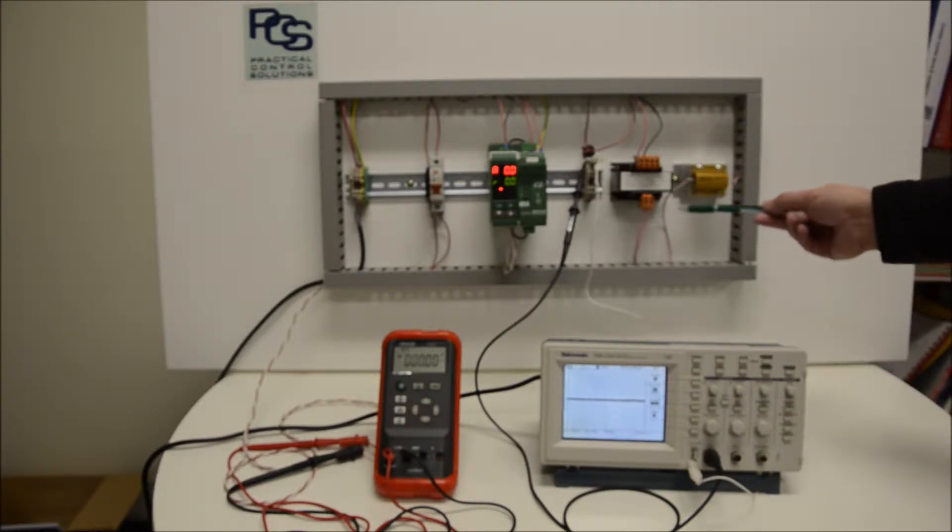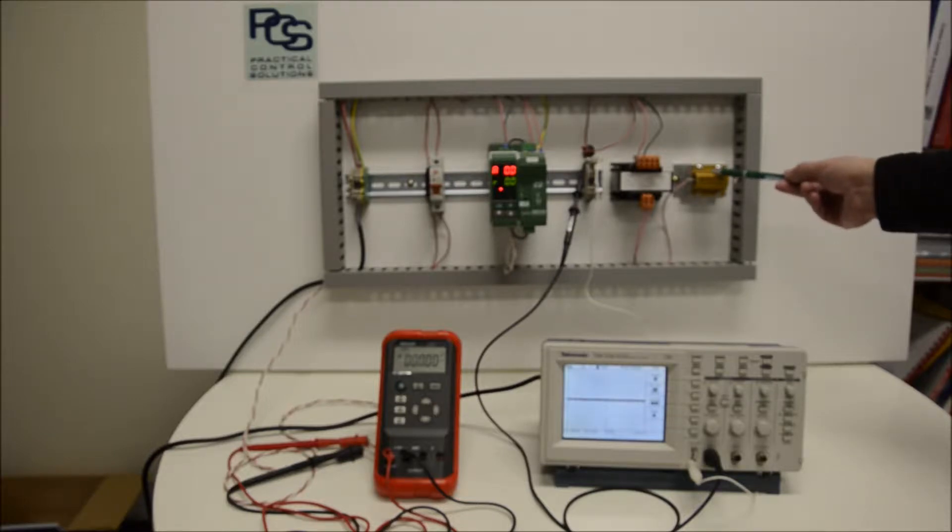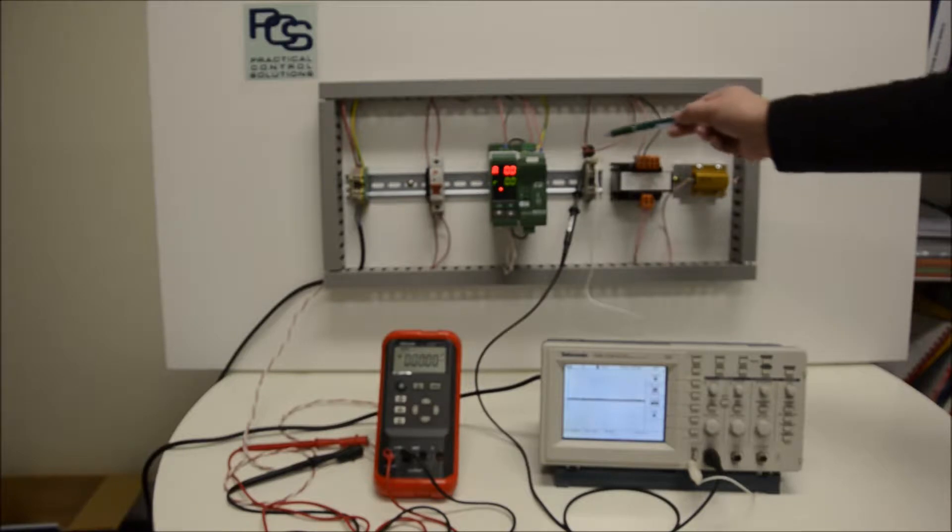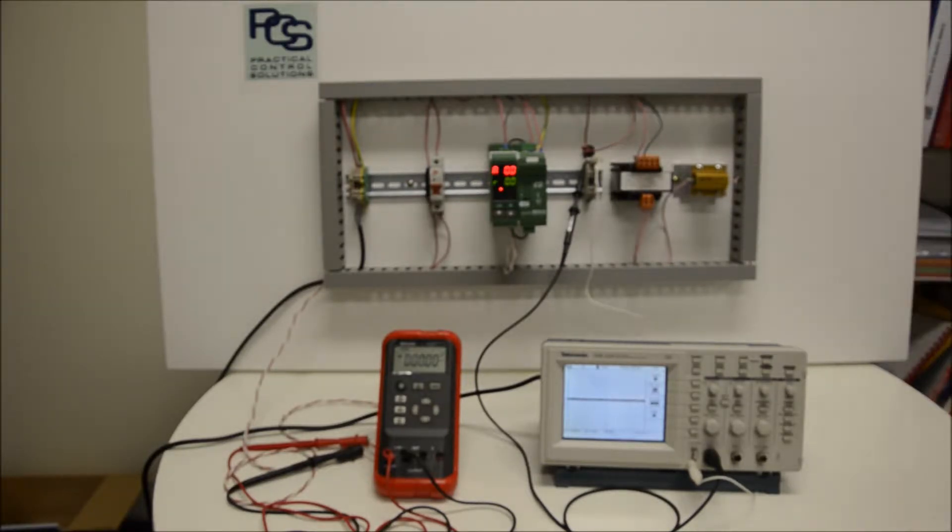On the secondary of the transformer we have a resistor acting as our load, and we're picking up the current through this small current sensor. At the moment we're in phase control mode but we've got zero input on our thyristor.